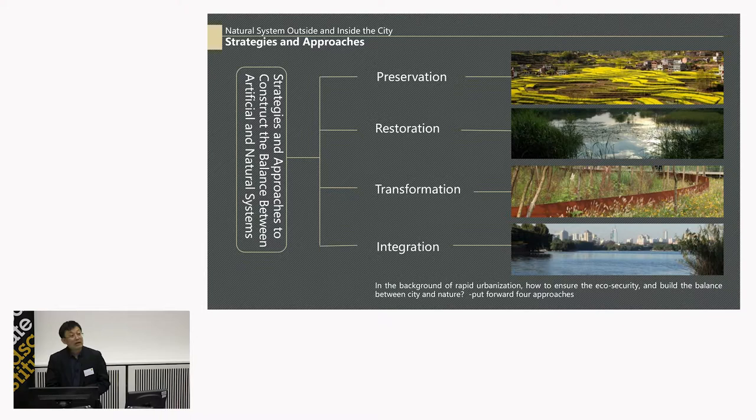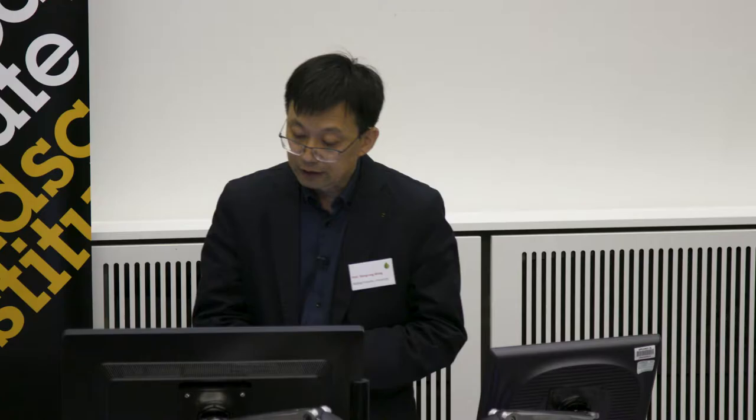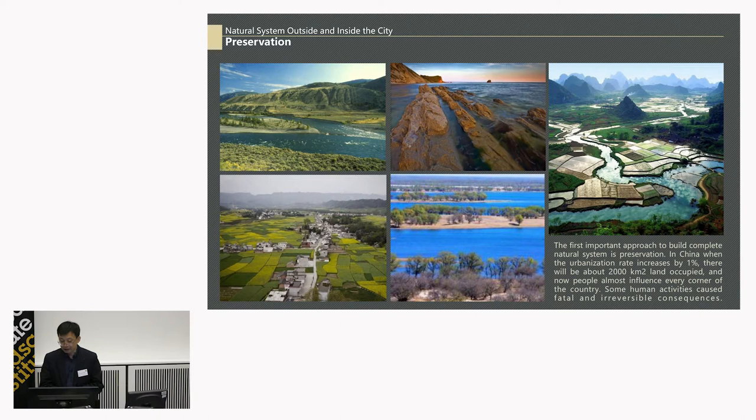In the background of rapid urbanization, how do we ensure ecological security and build the balance between nature and history, just as in our historical cities? Based on my own research and practice, I put forward four approaches: preservation, restoration, transformation, and integration. The first important approach to build a complete natural system outside and inside the city is preservation.